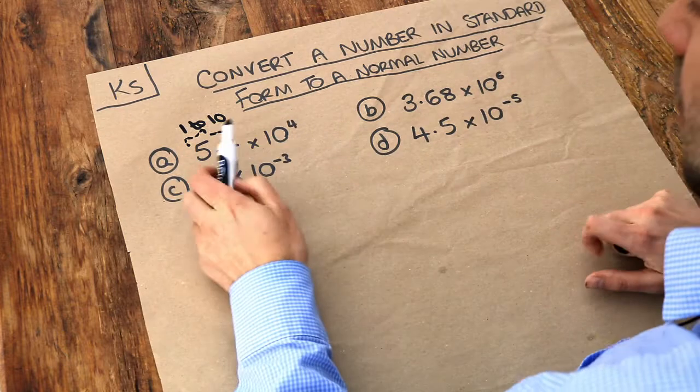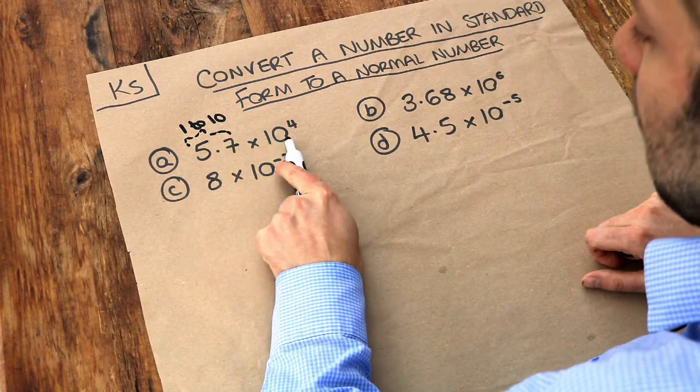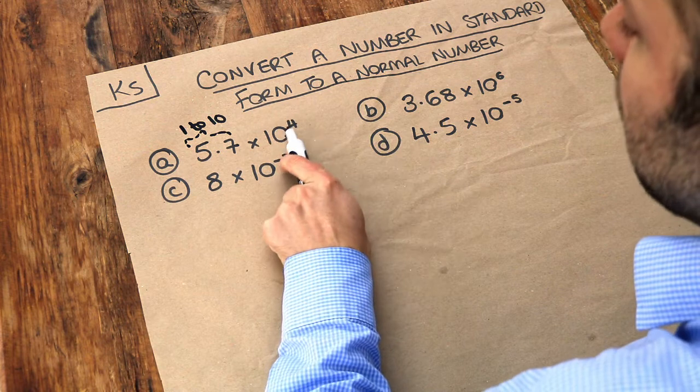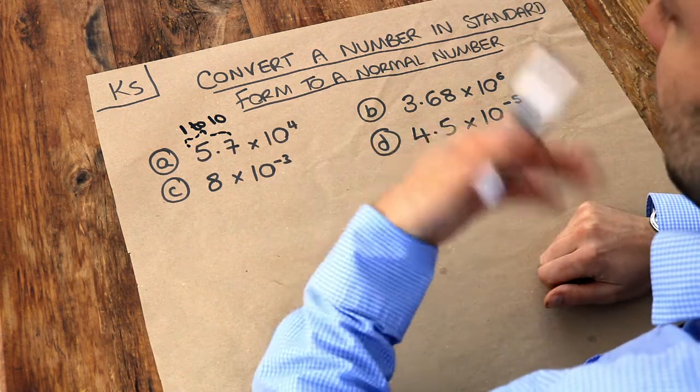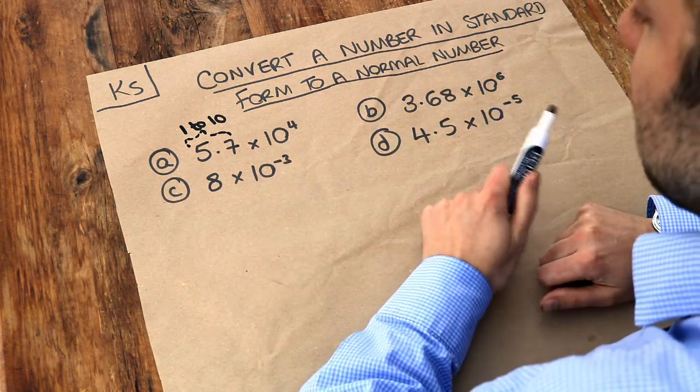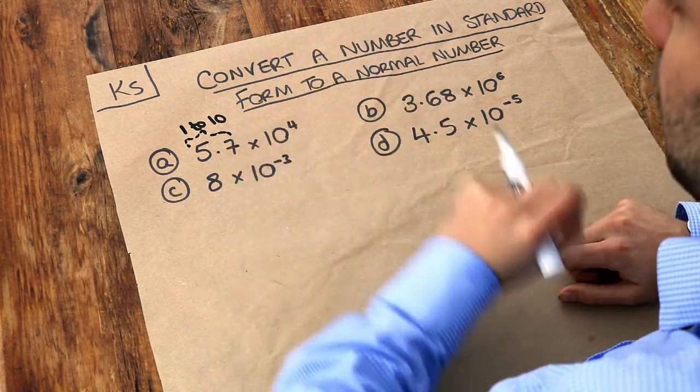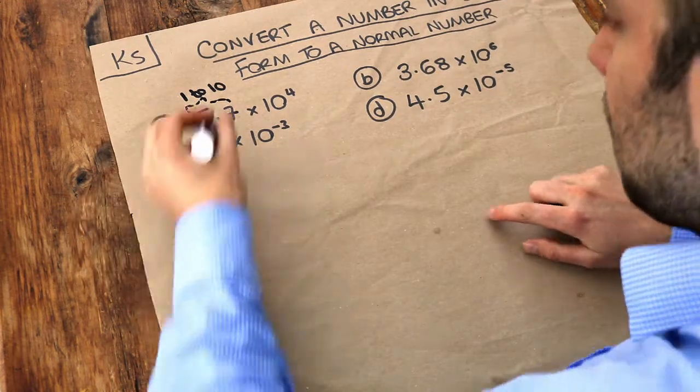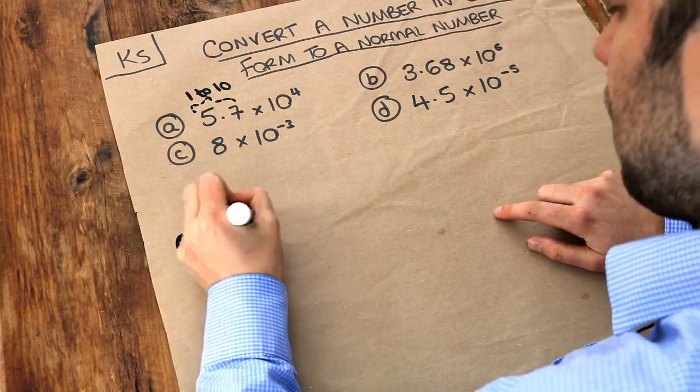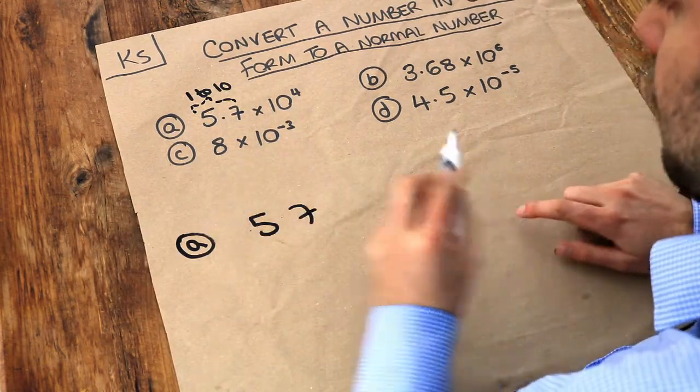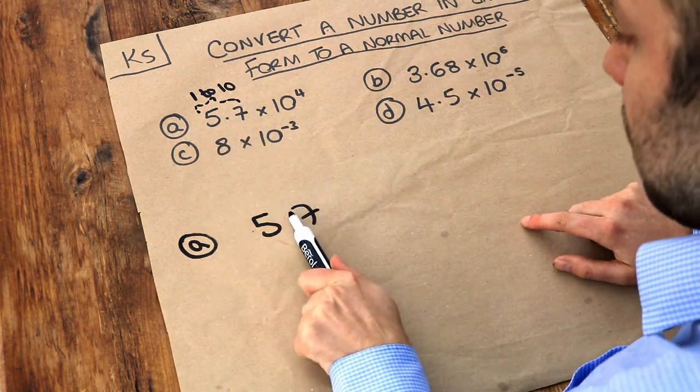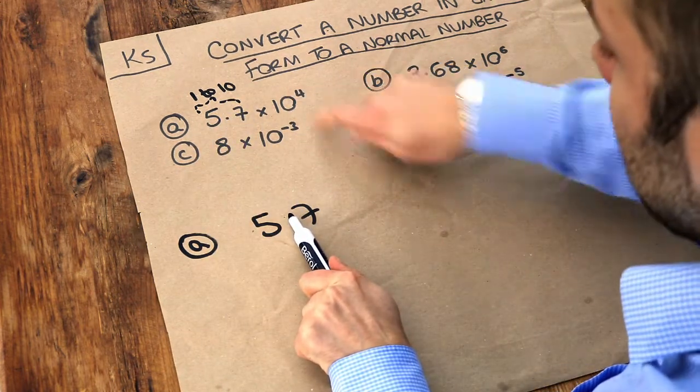What this basically means is that we want 5.7 and we're multiplying it by 10 four times, because 10 to the power of 4 means 10 times 10 times 10 times 10. We're multiplying by 10 four times. And remember that each time we times by 10 we move the decimal place once. So if we start with just the 5 and the 7 and ignore the decimal point for the moment, currently the decimal point is between here and we multiply by 10 four times.